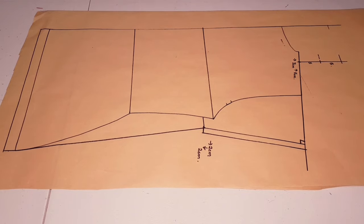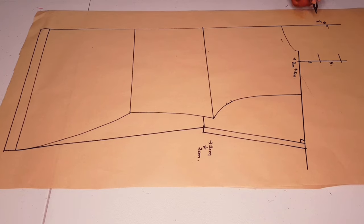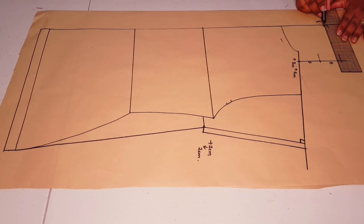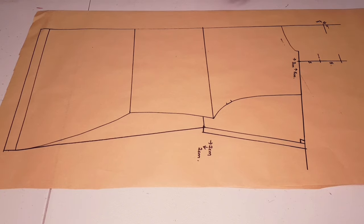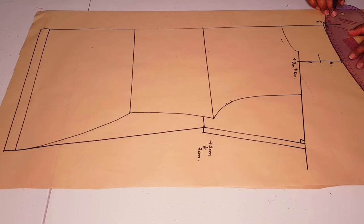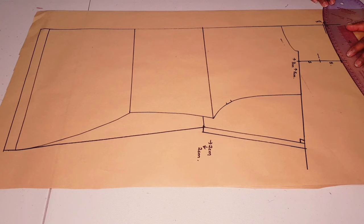That's five, five for each section there. Make sure you square that point across to the center back line. Then we're going to go down one centimeter at the center back from the squared line. Square a little line across.